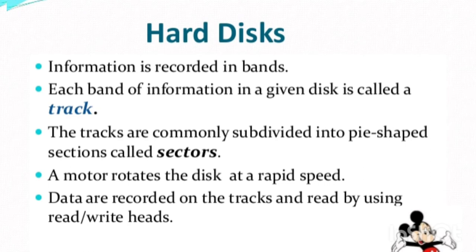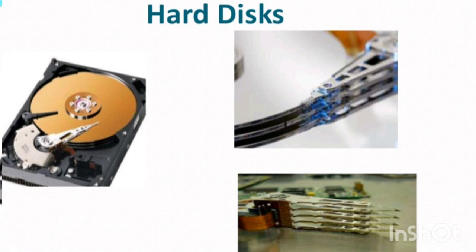The track is also subdivided into a pie-shaped section, and this pie-shaped section is called the sector. So the structure is: band, then track, then sector. In the hard disk, there is a motor that rotates the disk at a rapid speed. All the data we enter is recorded on the tracks. This hard disk was invented after the floppy disk.